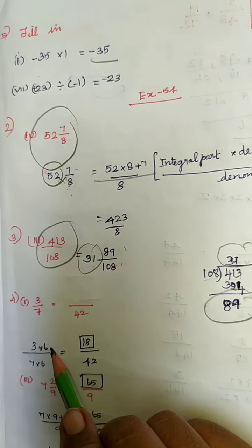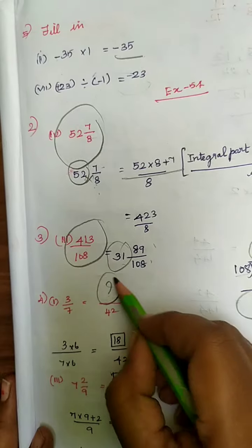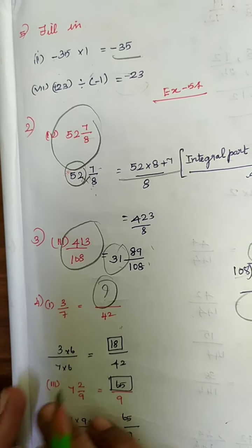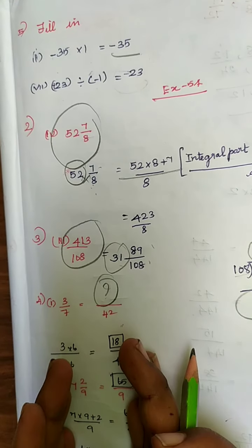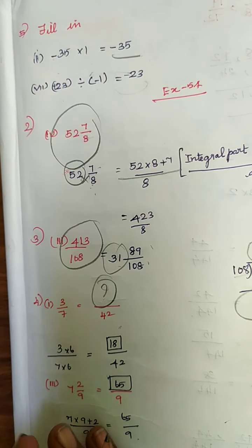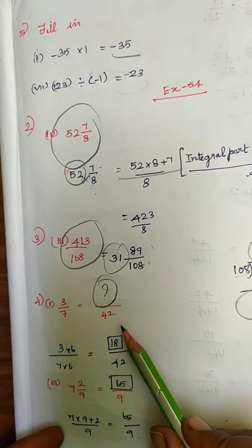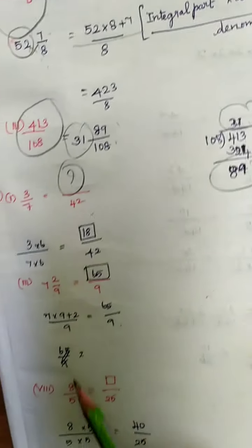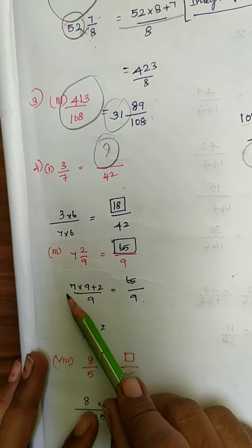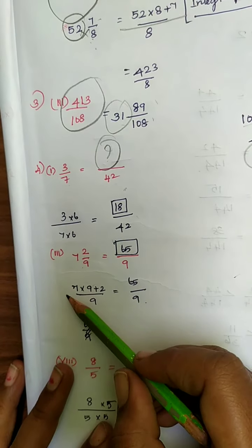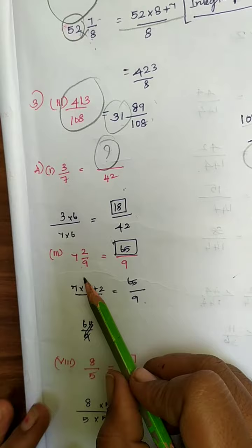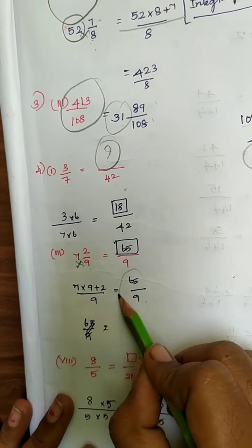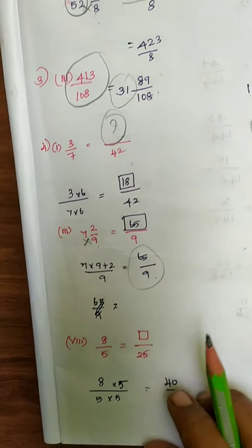Fourth problem: fill in the blanks. You don't have the numerator but the denominator is 42. When will 7 become 42? When you multiply it by 6 — 7 sixes are 42. So multiply the numerator also by 6, giving 18. Next: 7 and 2 by 9 — a mixed fraction — converting to improper: 7 into 9 plus 2 is 65 by 9, so the answer is 65.